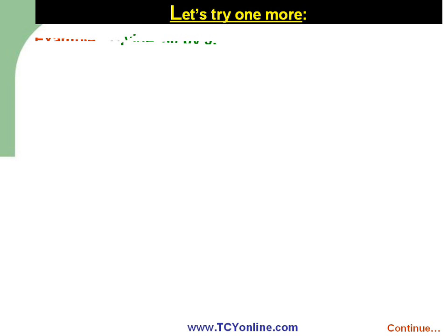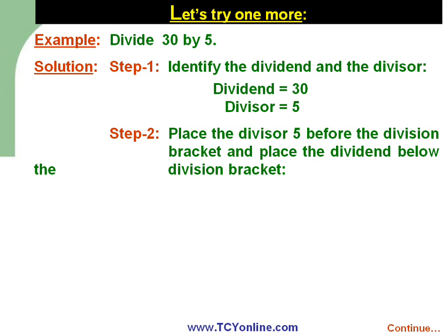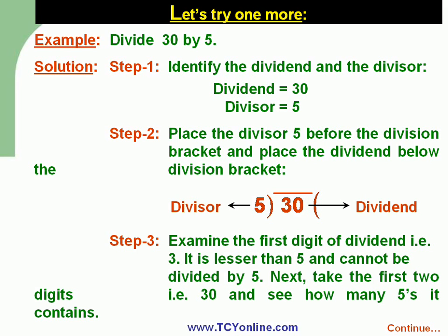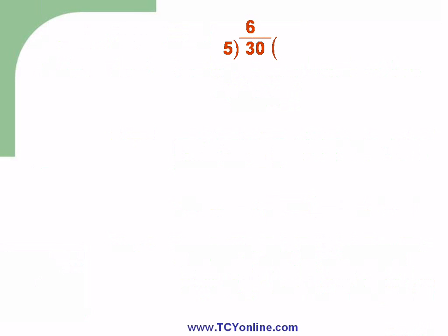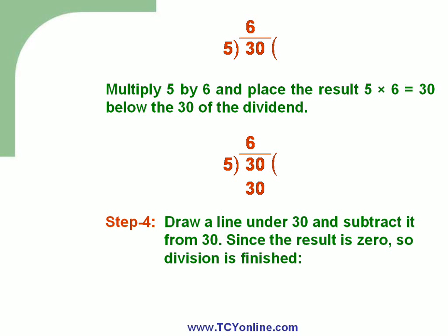Let's see one more example: divide 30 by 5. Here 30 is the dividend and 5 is the divisor. Place the dividend under the division bracket and the divisor before it. The first digit is 3, which is less than 5, so take the first two digits — 30 — and see how many fives it contains. There are six fives in 30. Place 30 from 5 times 6 under the 30 of the dividend, draw a line, and subtract to get 0. Division is finished and the quotient is 6.